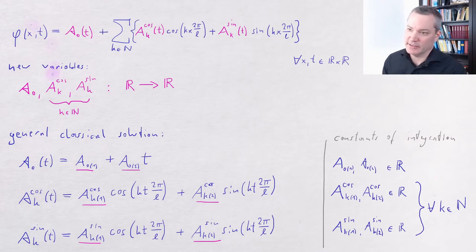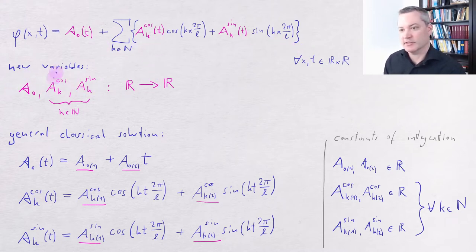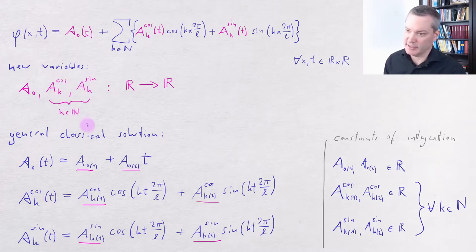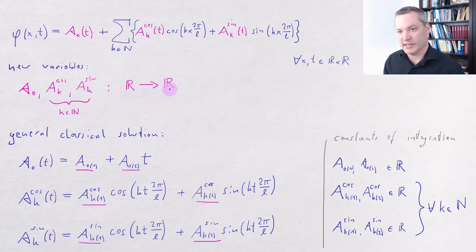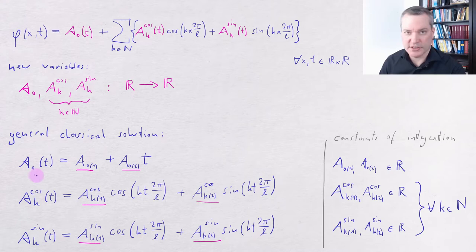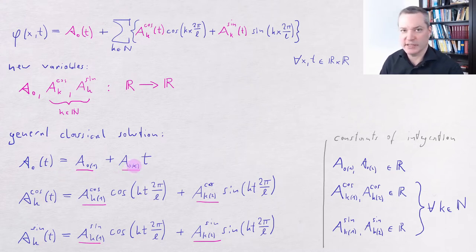Last time we expanded our periodic field phi in terms of its Fourier series, which gave us a new set of variables to describe the field. These were the Fourier modes uppercase A. We have the zeroth mode A0 and for each natural number k we have a cosine and a sine mode AK. These variables are real valued functions of time in the framework of classical physics. We found the general solution to the classical equations of motion, and importantly the individual modes are completely independent from each other. For each mode, the general solution depends on two real valued constants of integration, fixed by specifying initial conditions for the field.